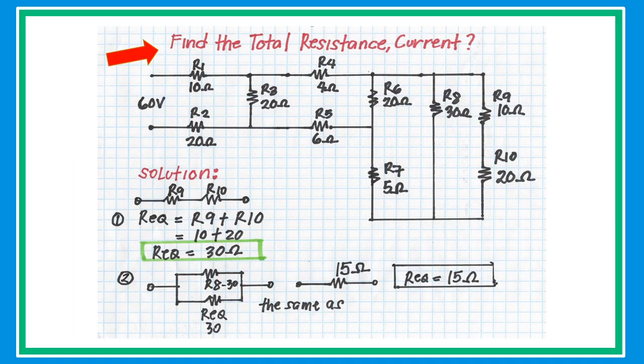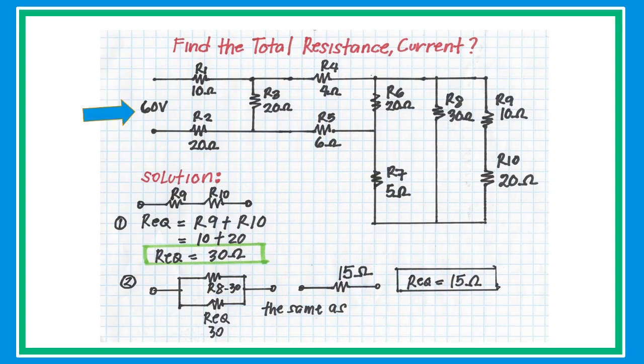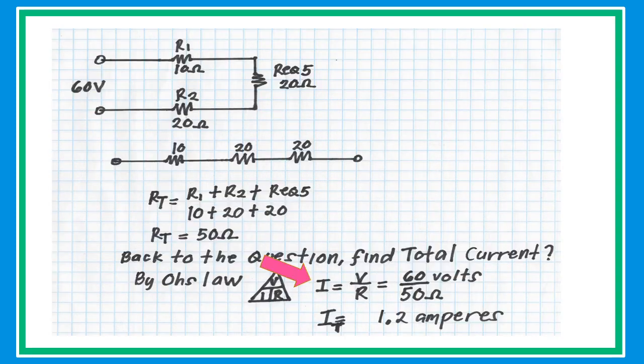Now find the total current. The voltage is 60 volts and the total resistance is 50 ohms. Using Ohm's law, I = V / R = 60 / 50, the total current is 1.2 amperes.